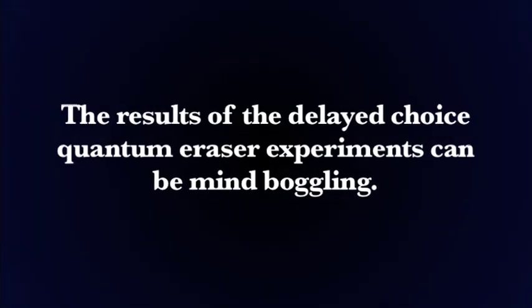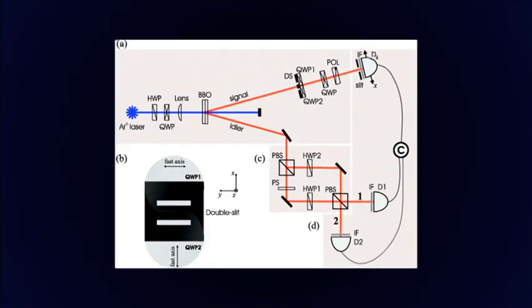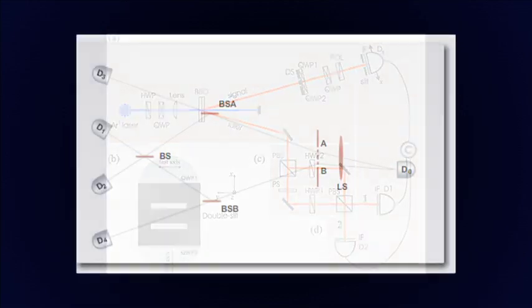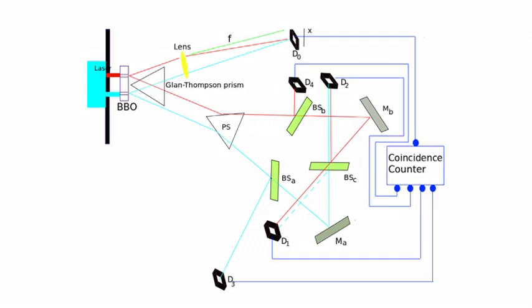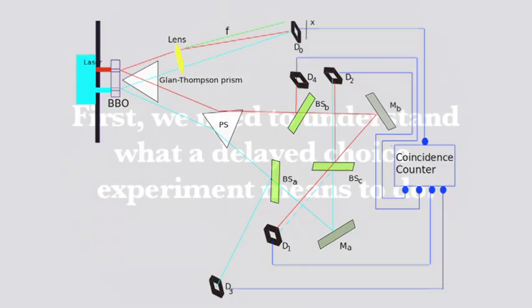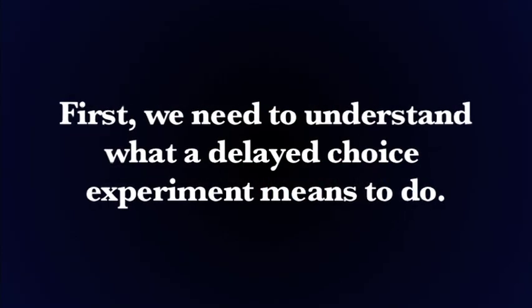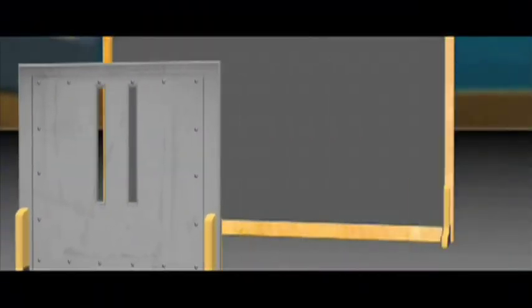The results of the delayed choice quantum eraser experiment can be mind-boggling in many ways, yet many people misunderstand the implications because they don't understand the experiments. So I'd like to explain the most famous one from 1999 and share the shocking implications of the experiment. But first, we need to understand what a delayed choice quantum eraser experiment means to do by modifying the original double slit experiment.